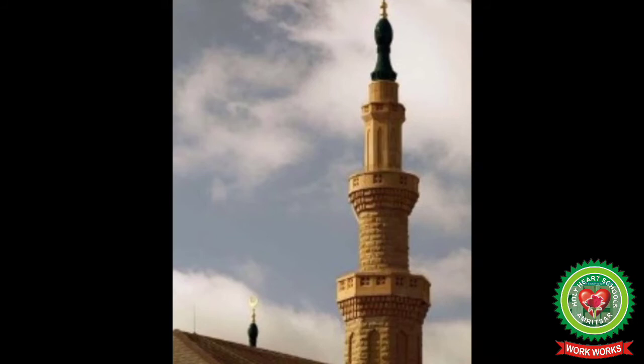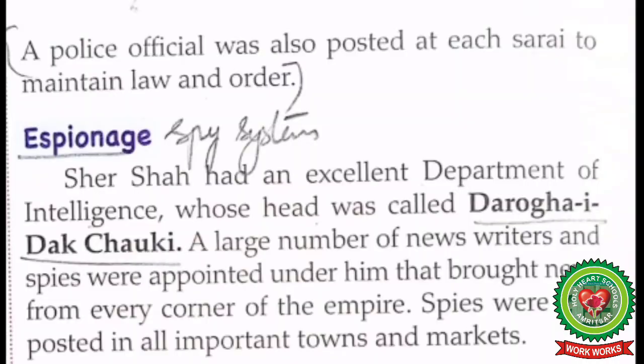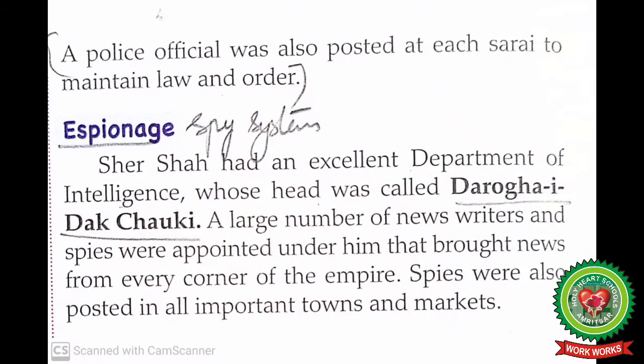Each sarai had a well, a mosque with an imam and a moezzin, and a police official was also posted at each sarai to maintain law and order. Regarding espionage, Sher Shah had an excellent department of intelligence whose head was called the Raqib-e-Dak-Chowky. A large number of news writers and spies were appointed under him, bringing news from every corner of the empire. Spies were also posted in all important towns and markets.